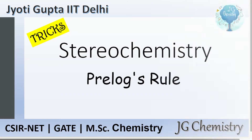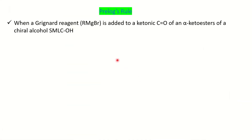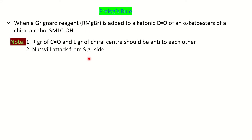Let's see Prelog's rule. The prerequisites are: you will have an alpha-keto ester along with a chiral alcohol having small, medium, and large groups. The reagent will be a Grignard reagent. For the mechanism, the keto carbonyl's R group should be anti to the large group of the alcohol. The entering nucleophile from the Grignard reagent will attack from the small group side — whatever stereochemistry the small group has, either below or above the plane, the same stereochemistry will be there for the entering nucleophile.